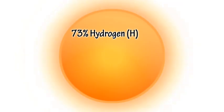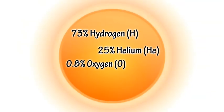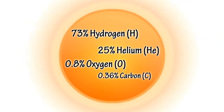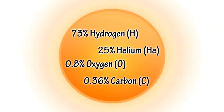Stars are made up of a number of different elements. The Sun is composed of about 73% hydrogen, 25% helium, 0.8% oxygen and 0.36% carbon, plus smaller amounts of other elements.